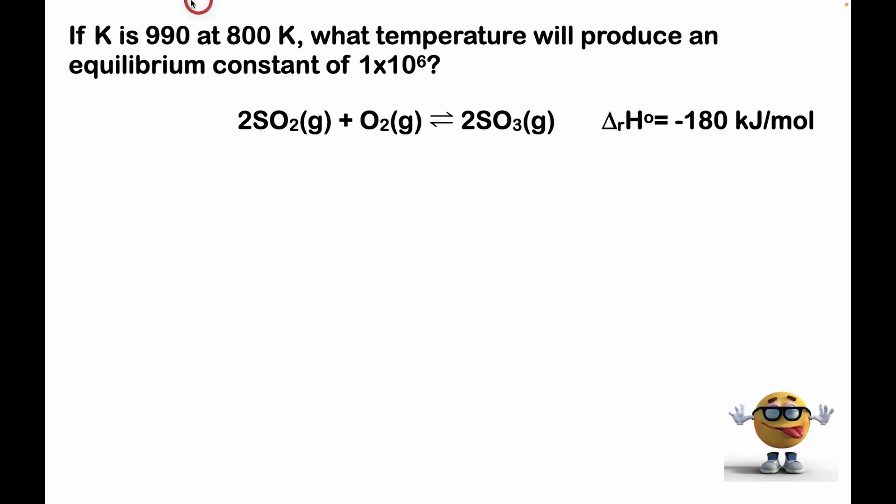Hey, what's up team? We're going to solve a very popular exam problem using the Van't Hoff equation, and this is it. If the equilibrium constant K is 990 at 800 Kelvin, what temperature will produce an equilibrium constant of a million?